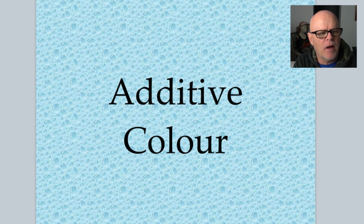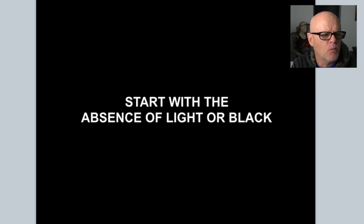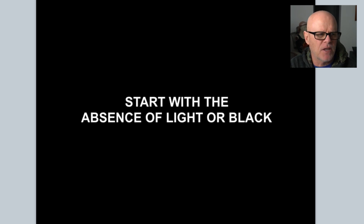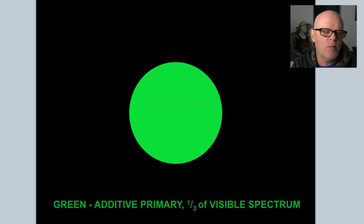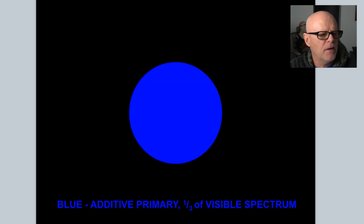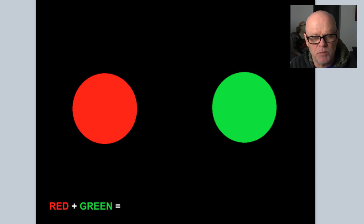I'm going to build some colour wheels — make sure you print off the M1 one, as we'll use it for colour correction in the next video. We start off with the absence of light — black — and we're going to add to it. That's why this is called additive synthesis. We start with black and add red, which is an additive primary and a third of the spectrum. We also have green — a third of the primary as well. And blue is also an additive primary, the third of the spectrum. Now what happens when we start to mix these colours? If we mix red and green together, you will get a secondary colour.